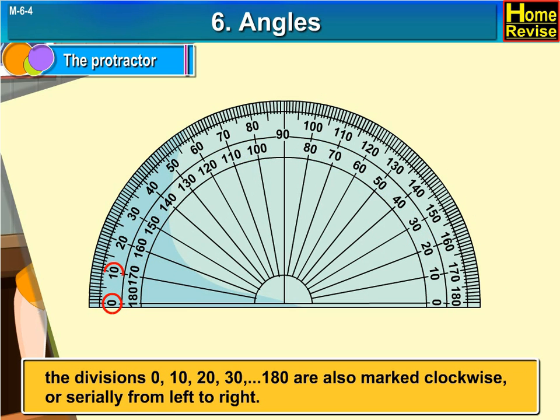The divisions 0, 10, 20, 30, so on up to 180 are also marked clockwise or serially from left to right.